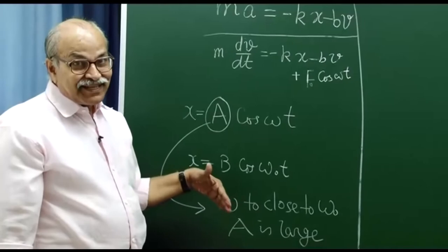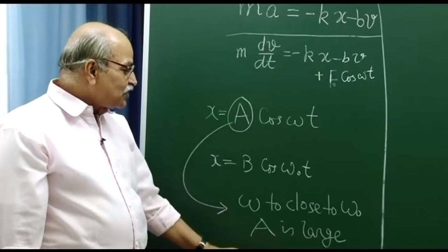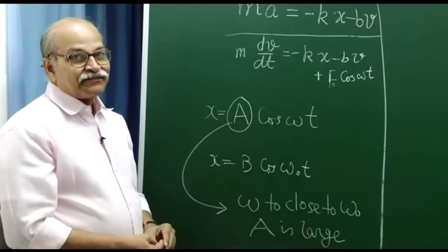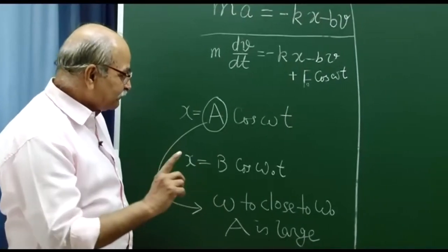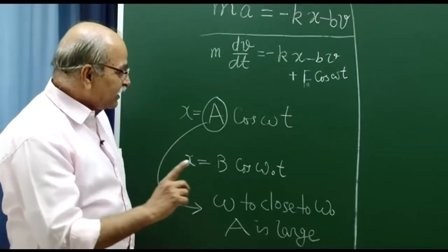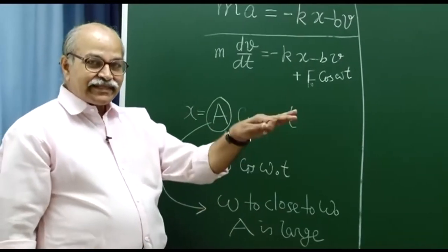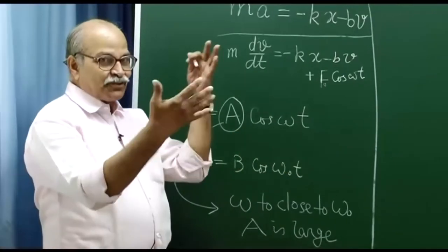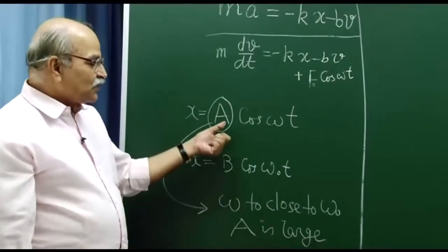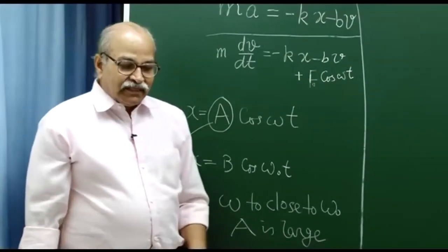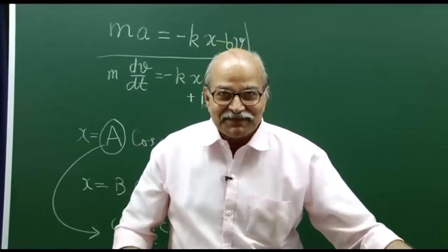This phenomenon is known as resonance. When these frequencies match, you have large amplitudes. That is what I was doing — I was adjusting my finger's oscillation frequency to match the natural frequency of the straw system. When that happened, the amplitude was large; when the frequency was very low or very high, the amplitude was small. I will show some more examples of resonance.